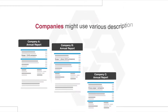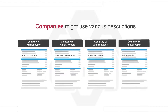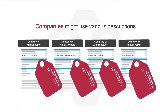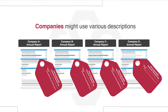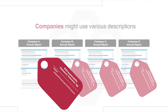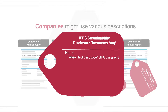For example, companies might use various descriptions when referring to their scope one greenhouse gas emissions. If each disclosure is assigned the same element from the IFRS sustainability disclosure taxonomy, a computer is able to determine that each company is referring to the same concept.